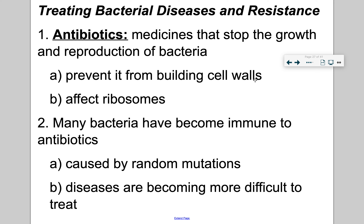Resistance to antibiotics can also be brought on by random mutations. As a result, diseases are becoming more difficult to treat because of overuse of antibiotics, not taking the full dosage, and of course random mutations. MRSA is a strand of bacteria that is resistant to a lot of antibiotics. It's a serious thing — if you have MRSA, the people treating you are gowned and masked up.